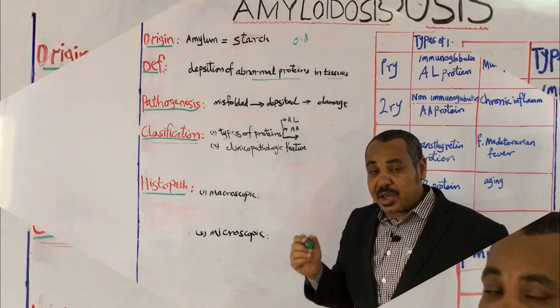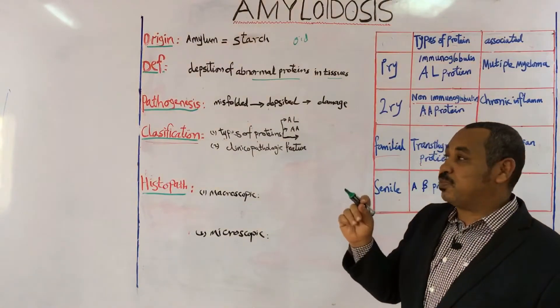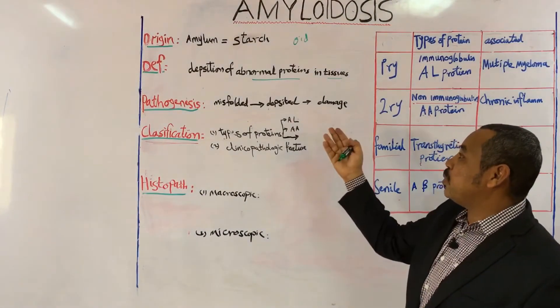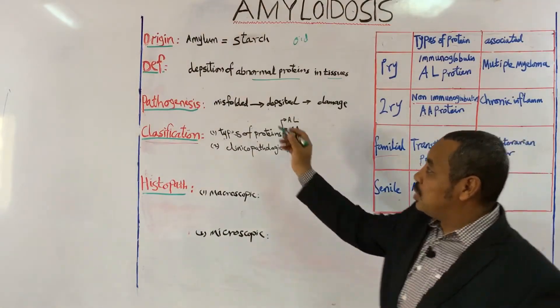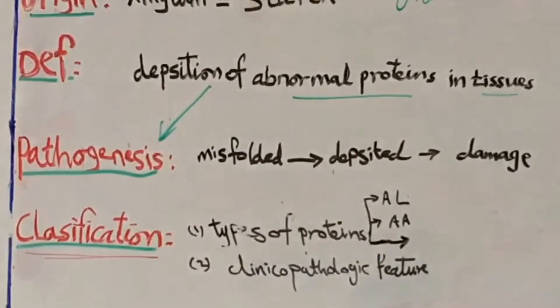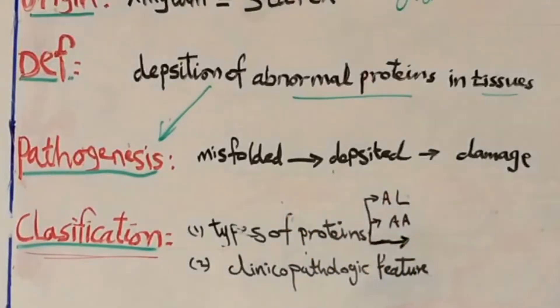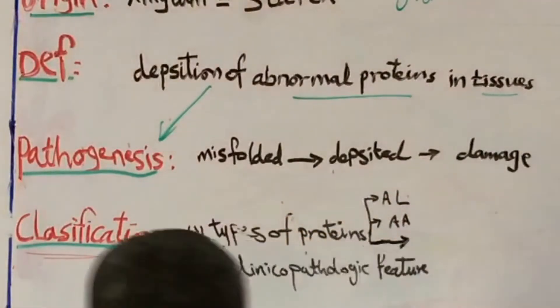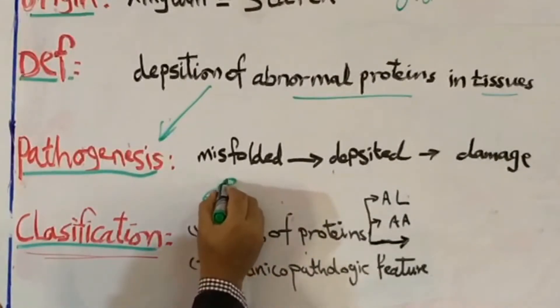And actually this abnormality is abnormal protein in the structure. So it will be misfolded protein. So the result of that is deposited in the tissues. This is maybe giving you more detail about the definition in this point, pathogenesis. And actually this is misfolded protein deposited in tissues. You know that normal protein will be folded like this for normal structure and function.